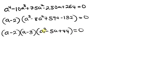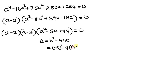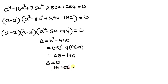We now have a quadratic. Let's check for real solutions using the discriminant: b² minus 4ac, where b = −5, a = 1, c = 44. So the discriminant is (−5)² minus 4 times 1 times 44, which is 25 minus 176, giving a negative value. Since the discriminant is negative, there are no real solutions from this quadratic.